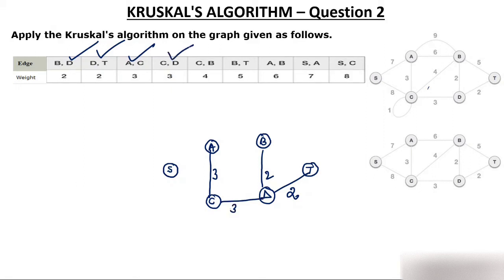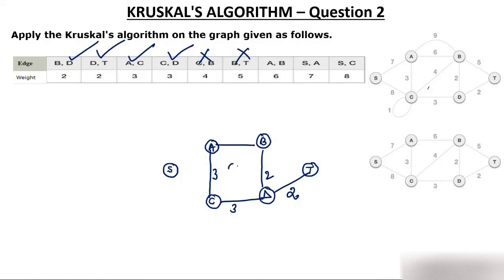CB — can I connect CB? No, because connecting CB would create a cycle, so discard it. BT — can I use BT? No, connecting BT creates a cycle, so discard it. AB — can I use AB? No, selecting AB creates a cycle, so discard it. SA — is there any cycle? No, so select SA with weight 7. SC — would connecting SC create a cycle? Yes, so discard it. This is our final MST.